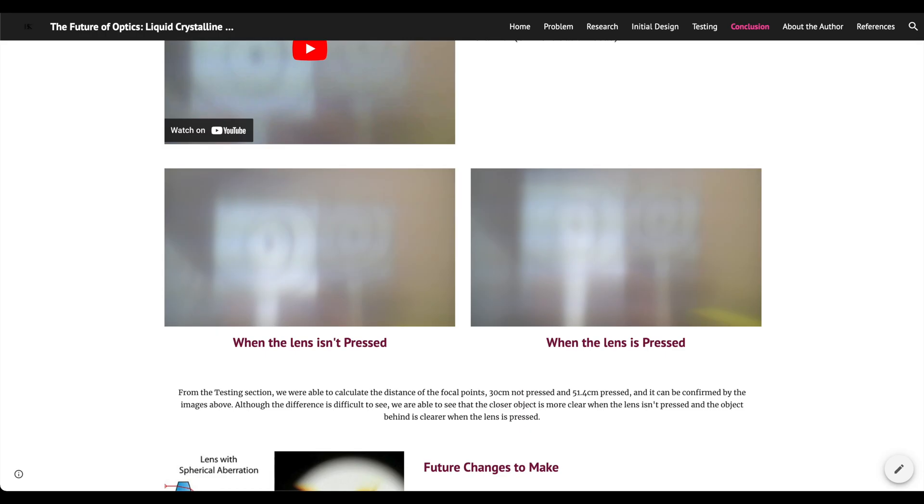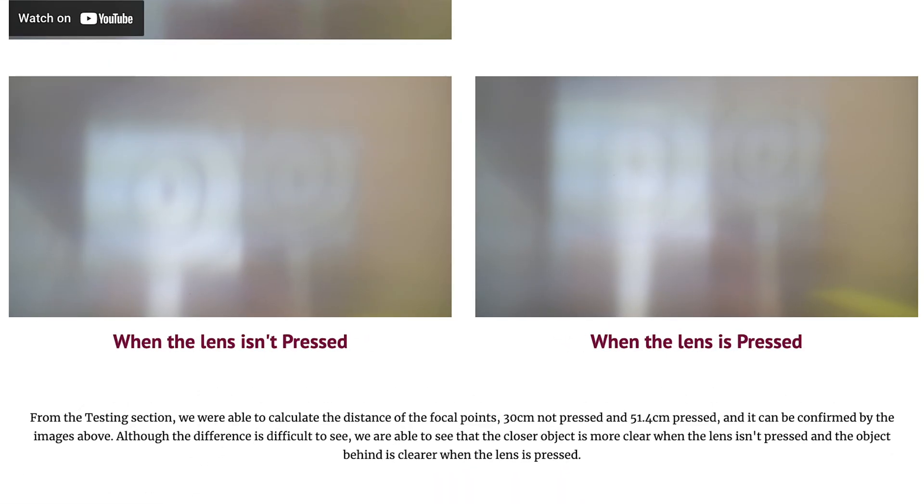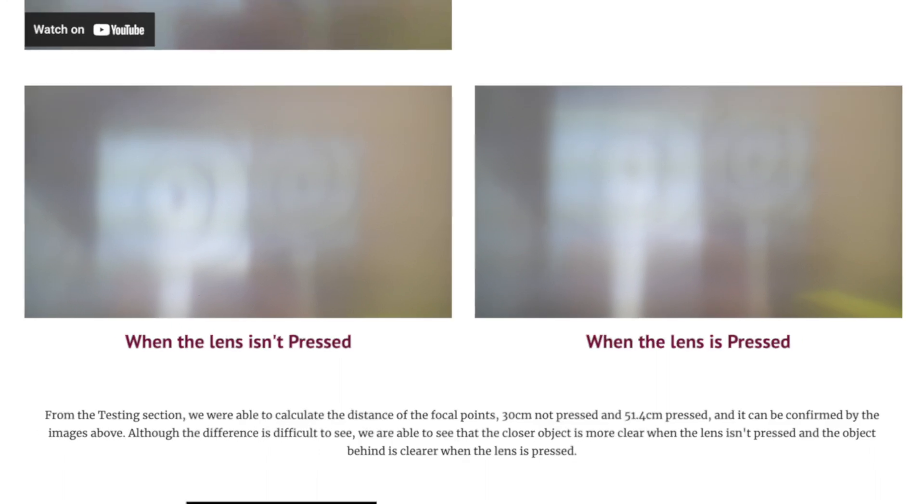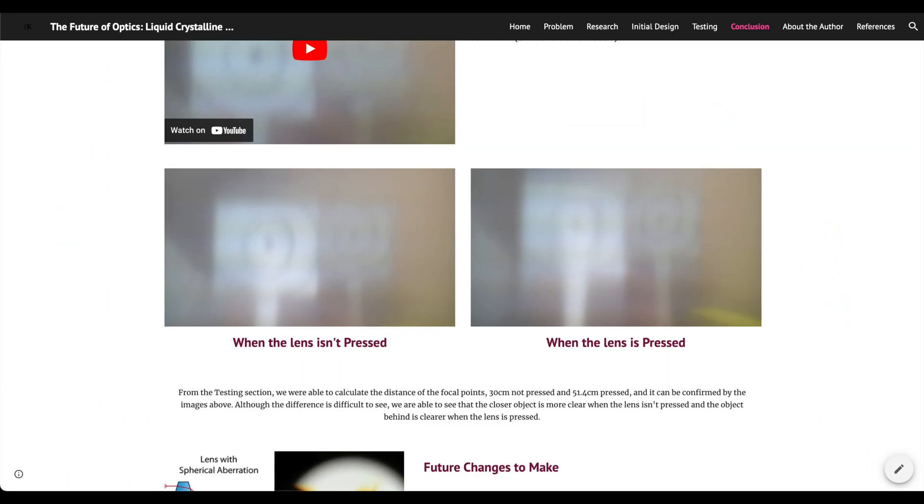In conclusion, what was proved by this project? We proved that as the lens gets pressed, the focus of the lens changes. When we compare the two photos, although the difference is difficult to see, we are able to see that the closer object is more clear when the lens isn't pressed, and the object behind is clearer when the lens is pressed. After numerous trials and errors, I've also made an ideal liquid lens design that solves the problems that the lens I've created had.